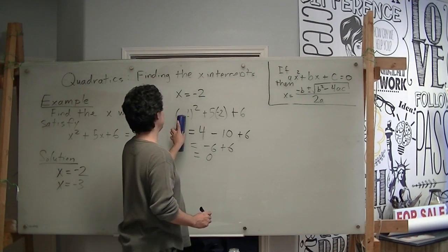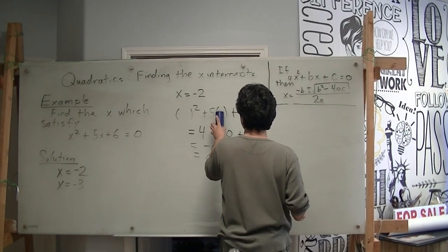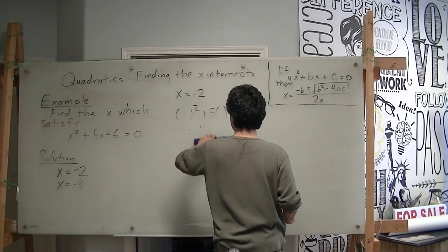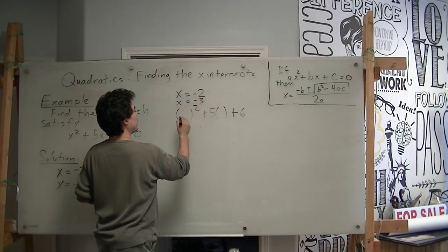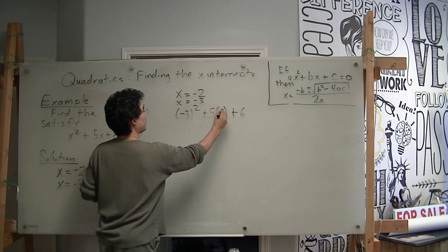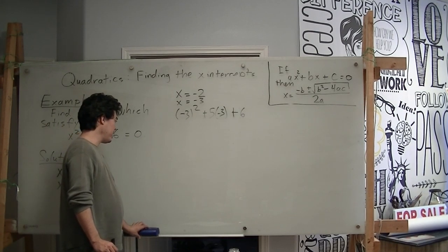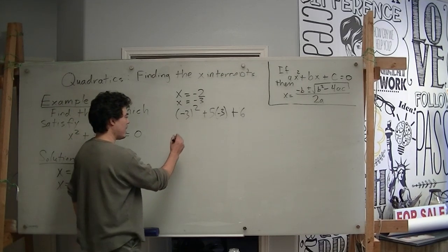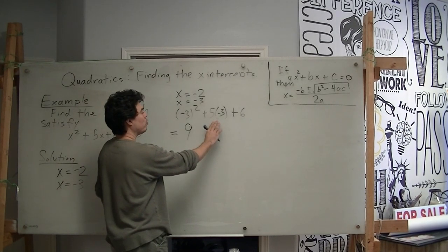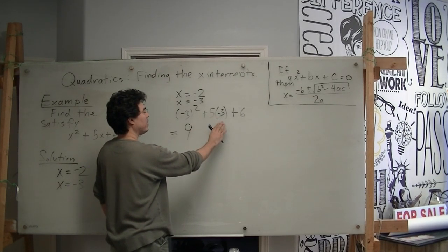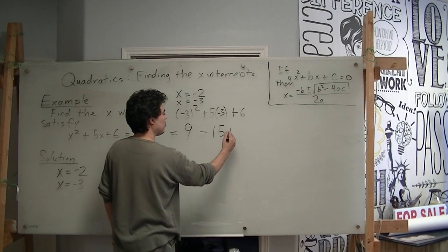Now, we're going to test the second solution that we got, which was x equals negative 3. And so we're going to write that here, x equals negative 3. Now, we're going to use negative 3 in the place of negative 2. Let's look what happens here. Negative 3 times negative 3 will be 9. The 5 times the negative 3 will be negative 15. So plus negative 15 will give us minus 15. And then again, plus 6.